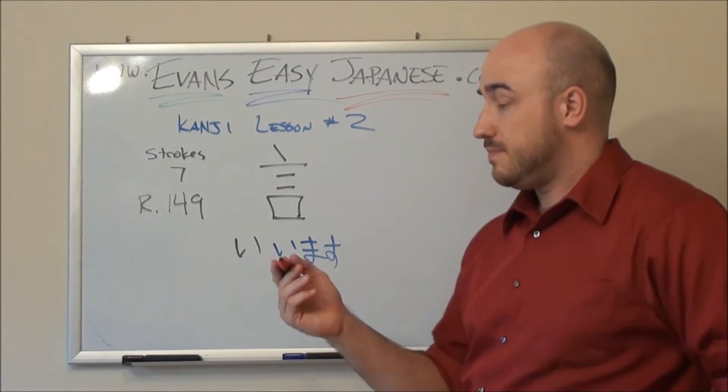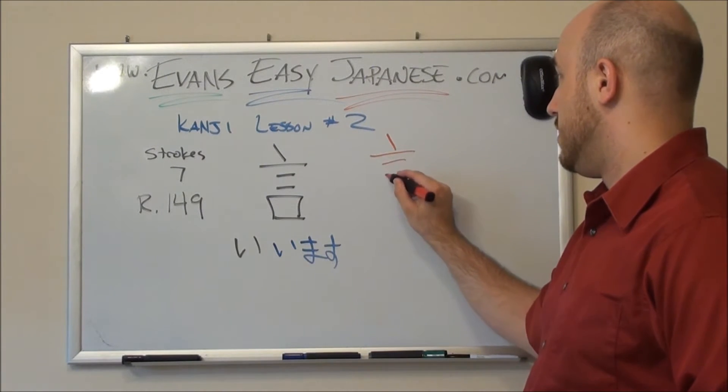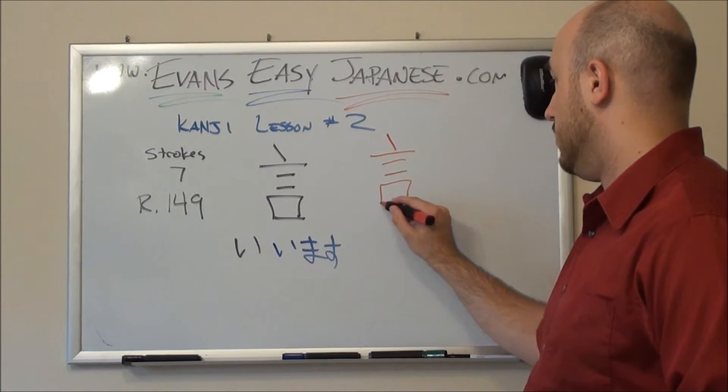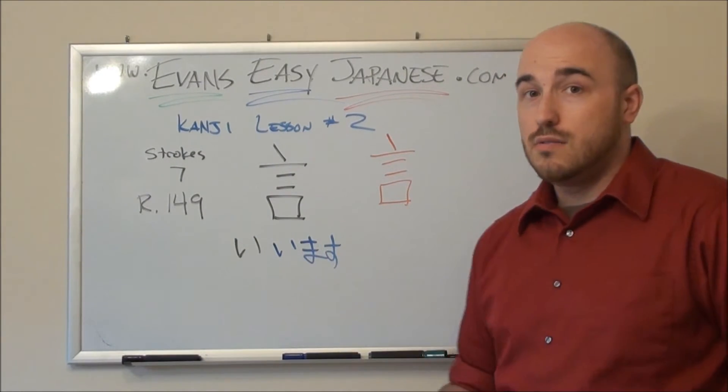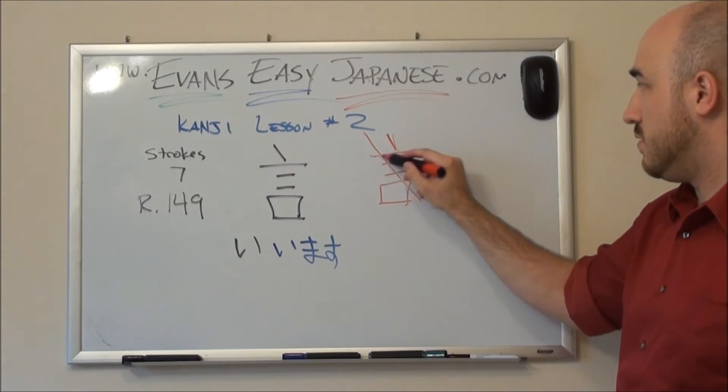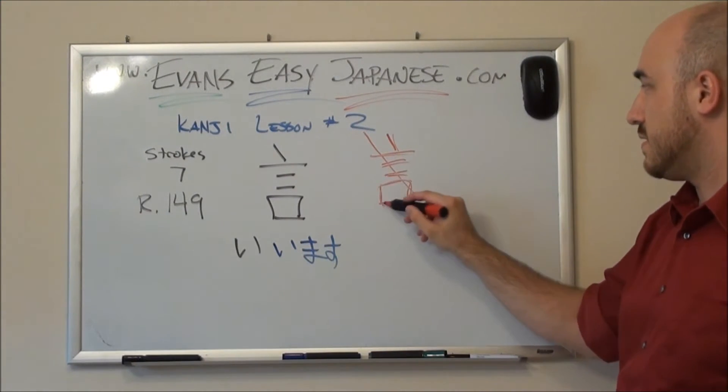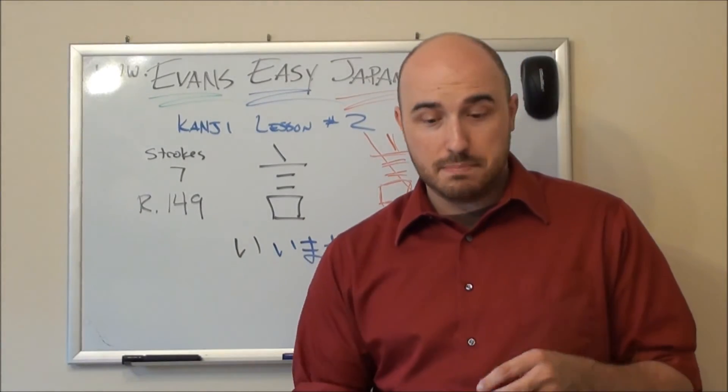Let's draw it together. Basic rule for kanji once again. Top left, bottom right. One, two, three, four, five, six, seven. Moving on up.